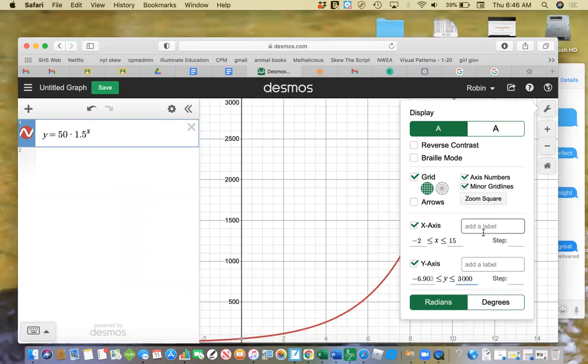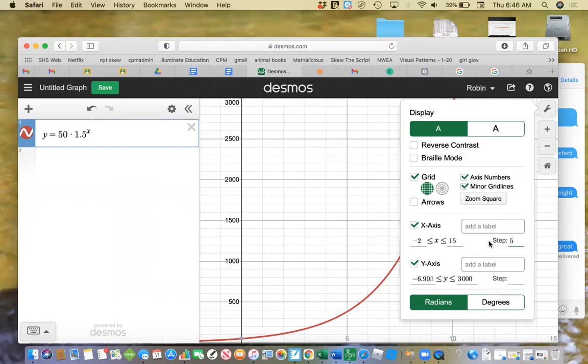And when I'm changing these, I can mess with these scales a little bit to kind of make it the way I would like. I can also add labels.